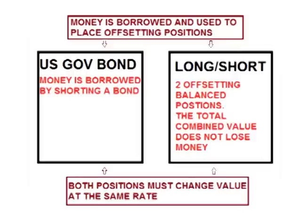Theoretically, using borrowed money at the risk-free rate by shorting a bond, one would be able to place two offsetting positions that combined make a profit that exceeds the interest on the bond, yet the total position has no risk of losing money. Since the position would pay a higher rate of return than the interest cost on the loan, and there would be no risk of losing money, it would be the same as making free money.